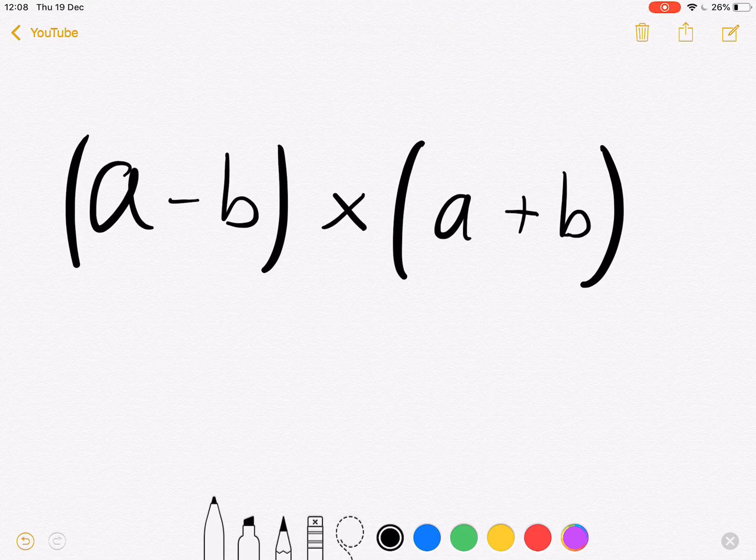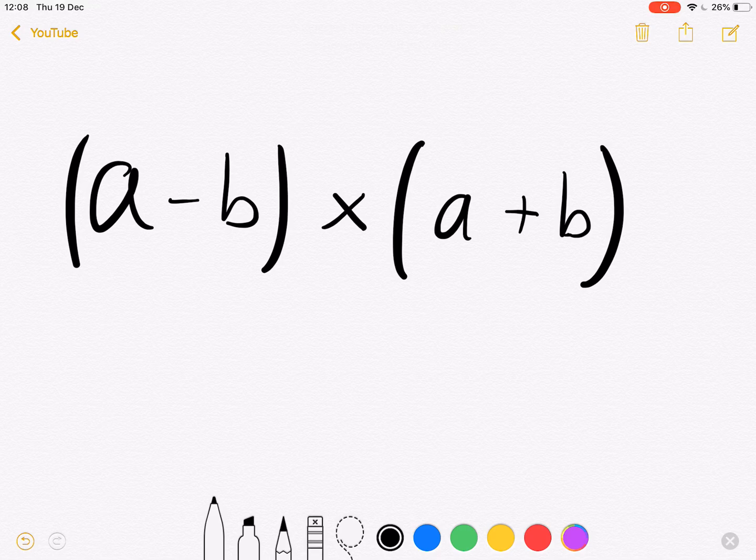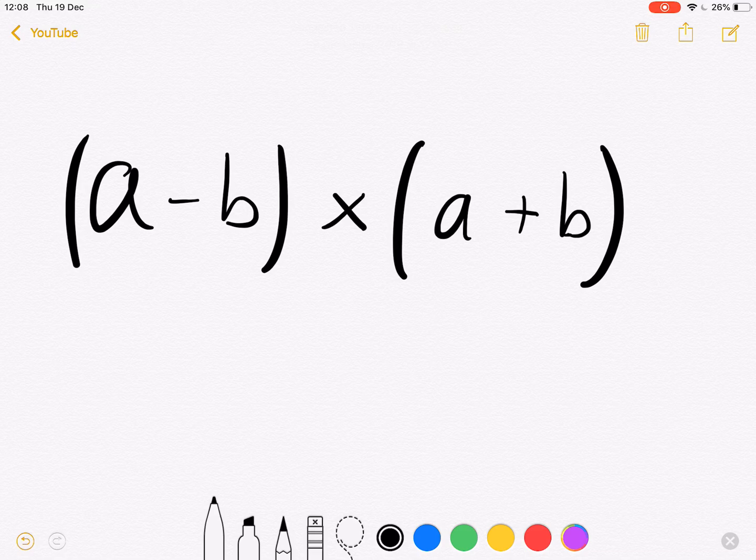Good afternoon and welcome to this video. Today we're going to be simplifying the vector expression (a - b) × (a + b), where a and b are arbitrary vectors.